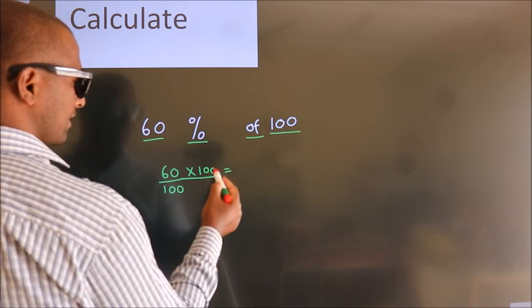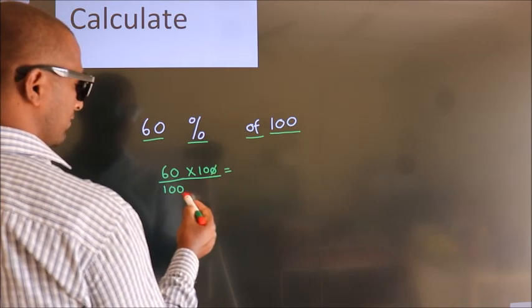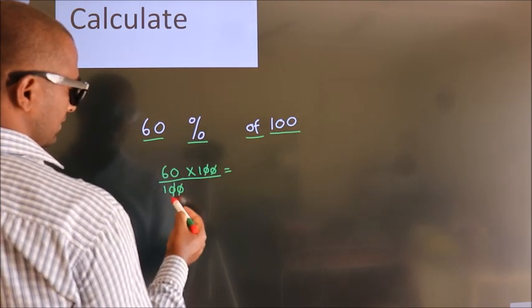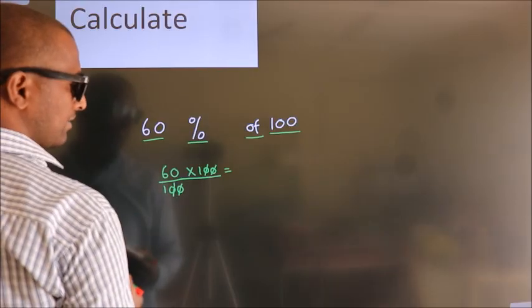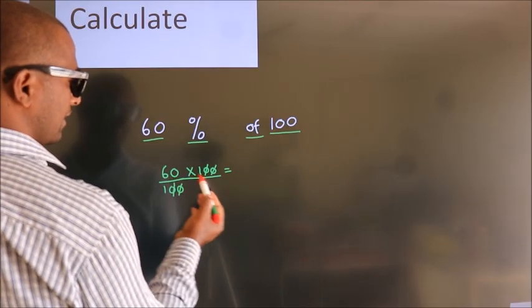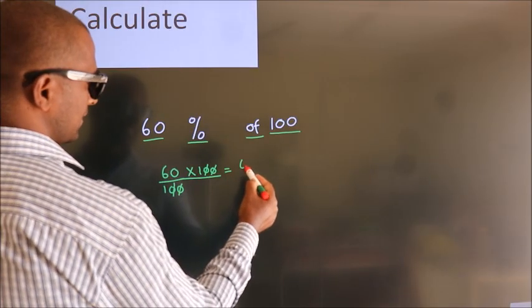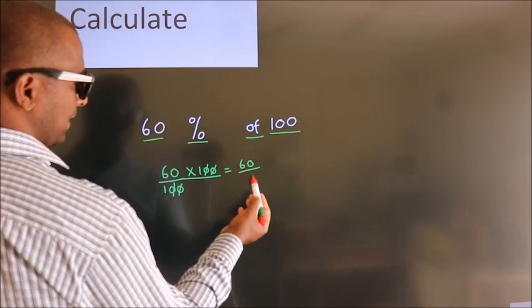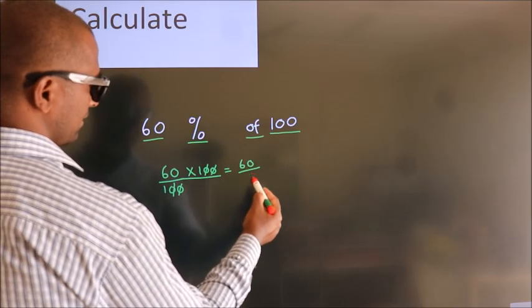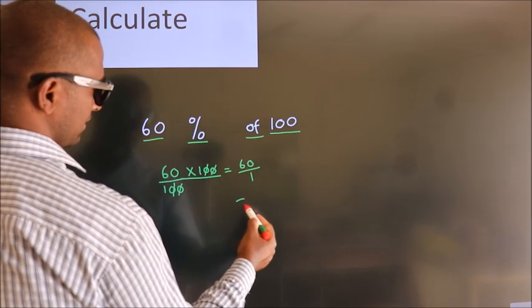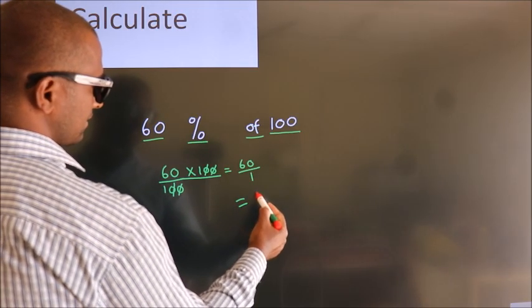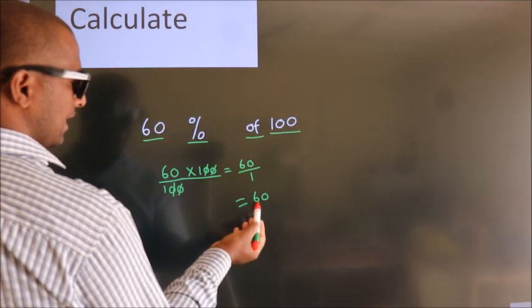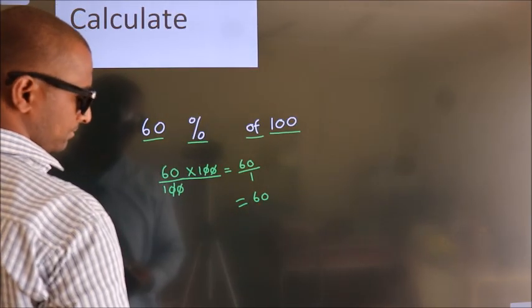I cancel this 0 with this 0. We are left with 60 into 1, which is 60. In the denominator, 1. 60 by 1 is 60. This is our answer.